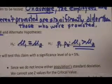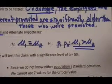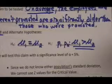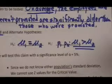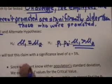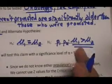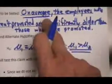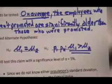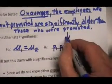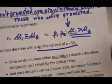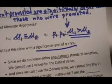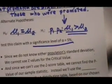Recall that we always set up and test the null hypothesis. Based on whether our test rejects or fails to reject the null hypothesis, we draw conclusions about the alternate hypothesis — which in this case is our original claim. We're going to test this claim with a significance level of five percent.